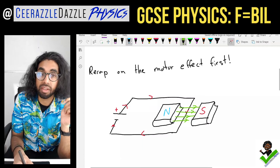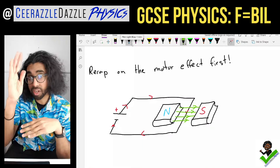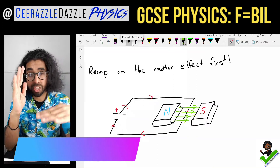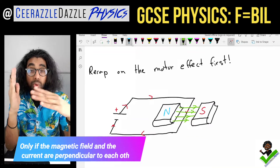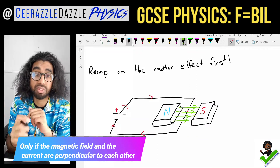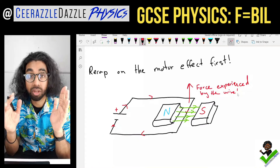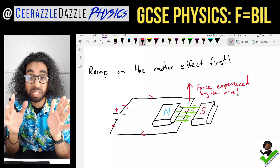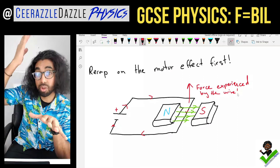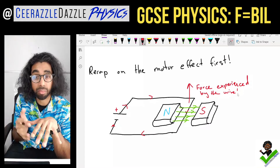We should remember that when current passes through a wire which is perpendicular to the field, the wire will experience a force. So the wire will actually physically move up.